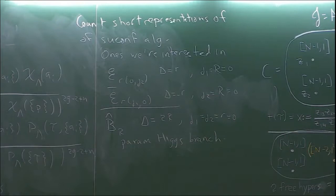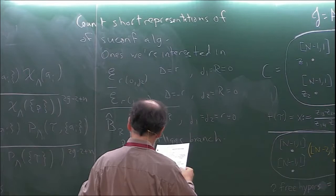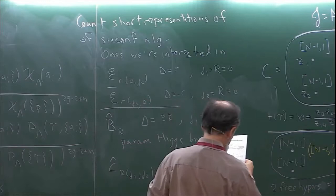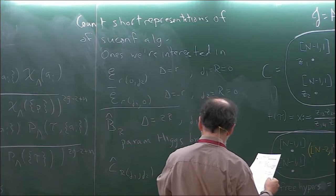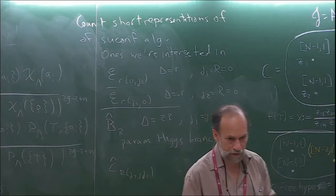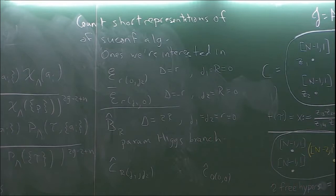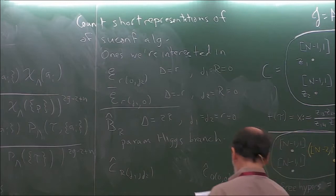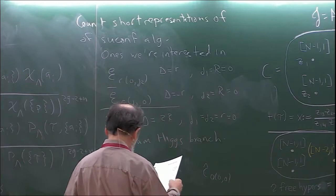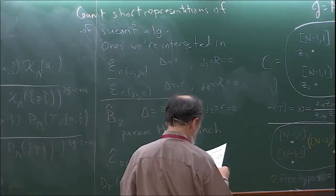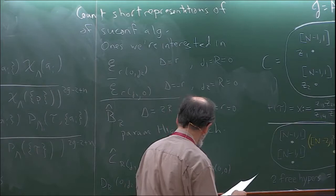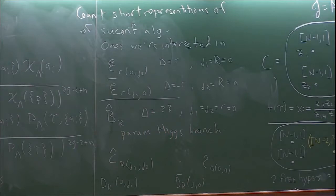Turning on these operators moves you out onto the Higgs branch. There are also other interesting representations: C-hat_{r,j_1,j_2}, where C-hat_{0,0,0} is the multiplet that the stress tensor lives in, so you might be interested in computing the number of those multiplets — that tells you how many stress tensors your theory has, which roughly tells you how many decoupled sectors there are. And there are multiplets D_{r,0,j_2} and D-bar_{r,j_1,0}.